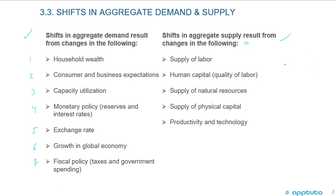Shifts in aggregate supply can result from: the supply of labor; changes in human capital — the quality of labor through training; supply of natural resources; supply of physical capital; or changes in productivity and technology.